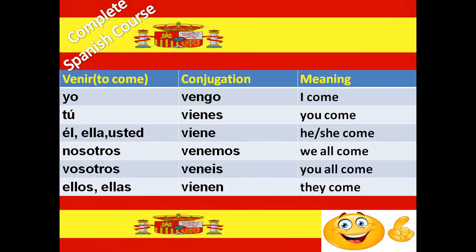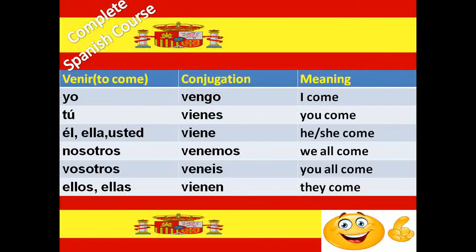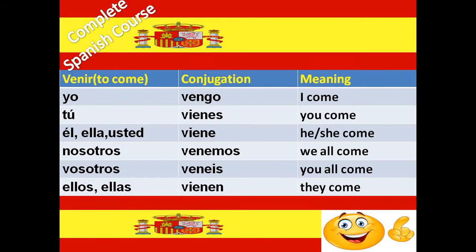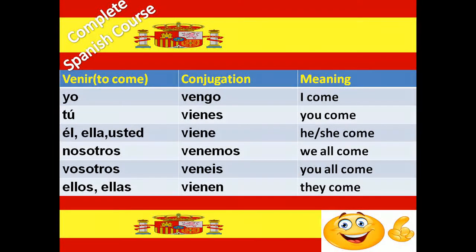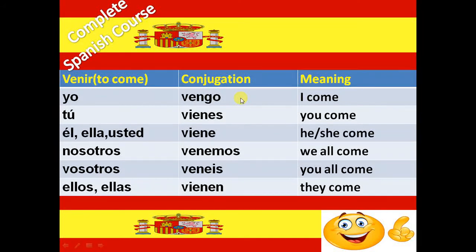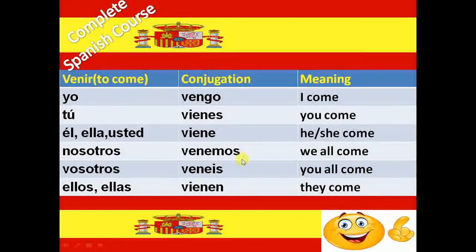Next verb is Venir. Venir means to come. The conjugation of Venir verb is Vengo, Vienes, Viene, Venimos, Venís and Vienen.